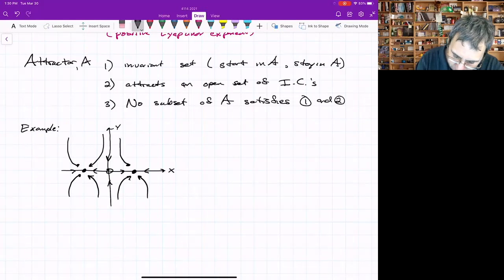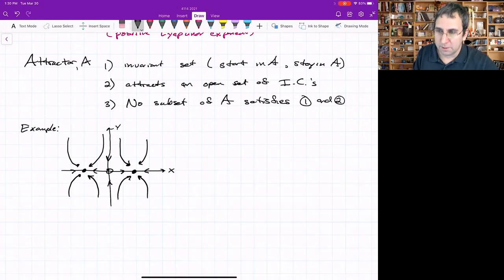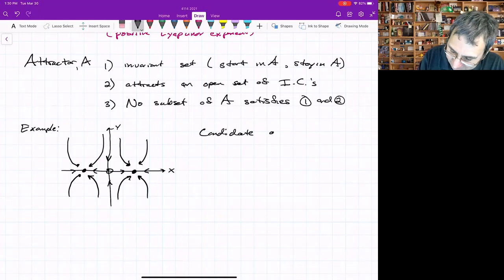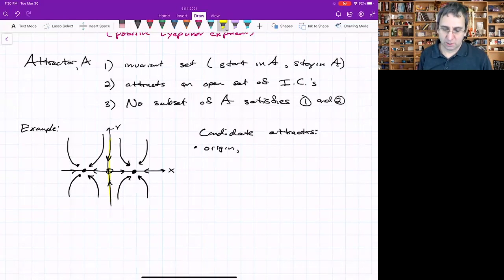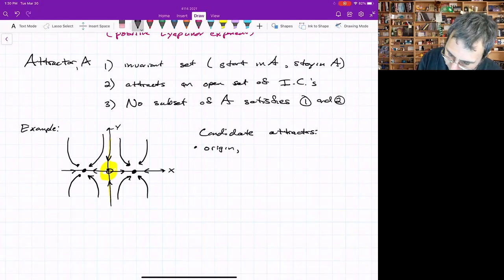Everything nearby is going to the stable nodes. This would be like after a pitchfork bifurcation in 2D. Now, what are some candidates for an attractor here? One would be the origin. It is an invariant set. If you start at the origin, you stay at the origin. But it does not attract an open set of initial conditions. It only attracts things along the y-axis. So it fails property two.